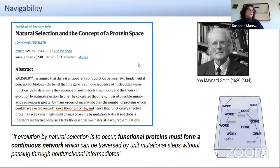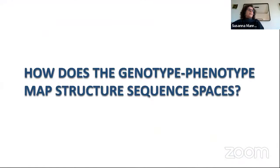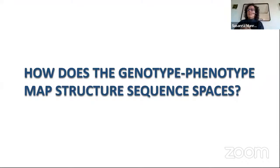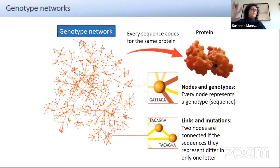This is what we are going to see today. We will start by asking ourselves: how does the genotype-phenotype map structure sequence spaces? What is the topology of these genotype networks, and in which ways do they fragment the space of sequences? This is the general picture we have.